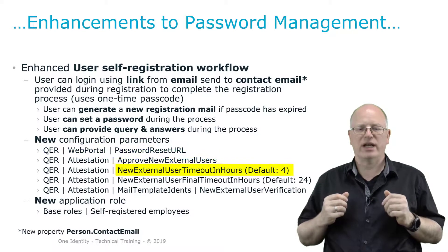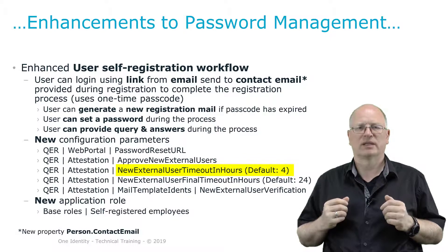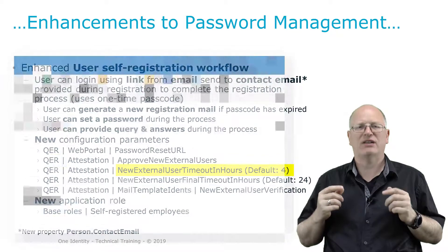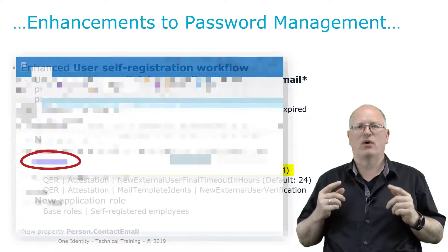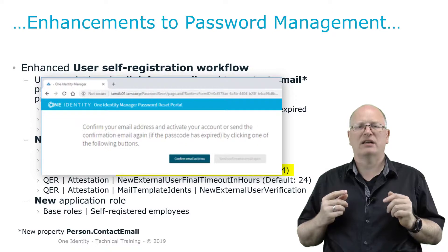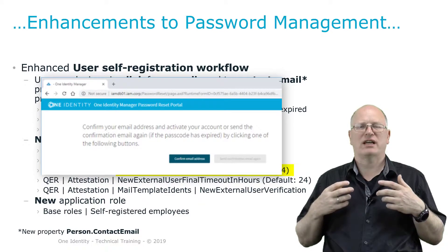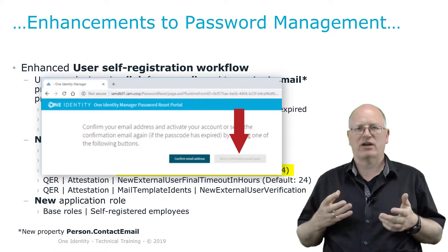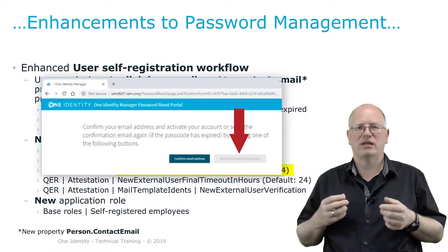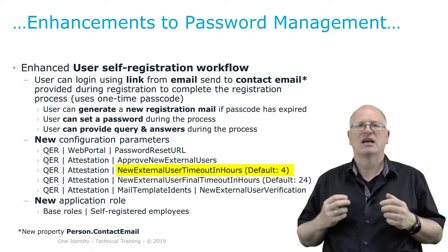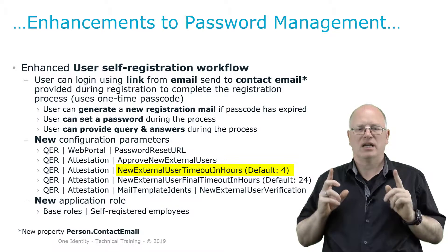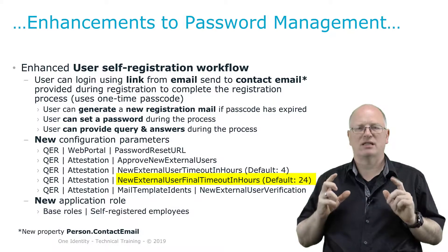Additionally, there are some other parameters visible on the slide. The first is 'New external users timeout in hours', also under QER | Attestation. This means the pass token received with that email is valid for — as default configured — four hours. If I get an email and don't sign in within four hours, the token expires and I'm unable to proceed. I can then click a link to request a new email with a new token and sign in with that.